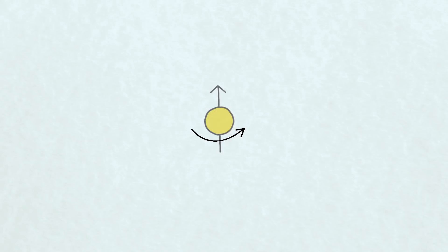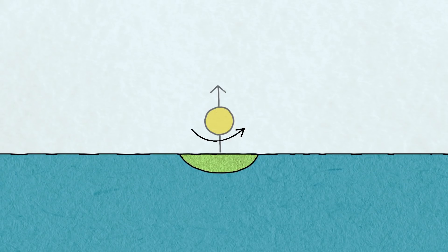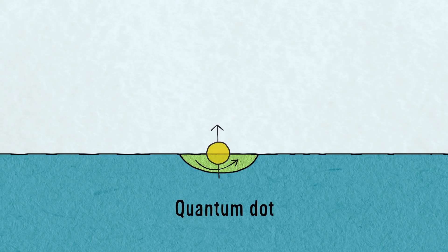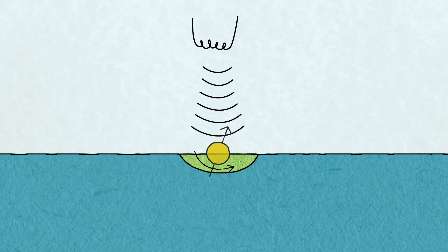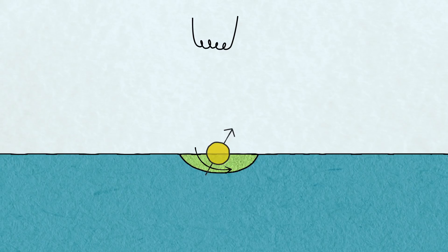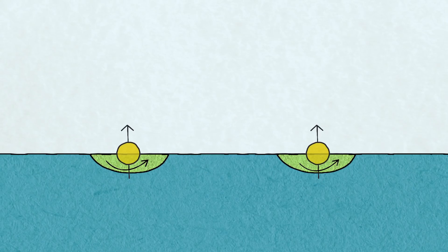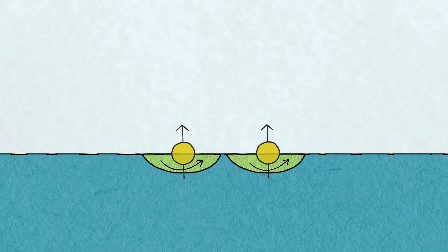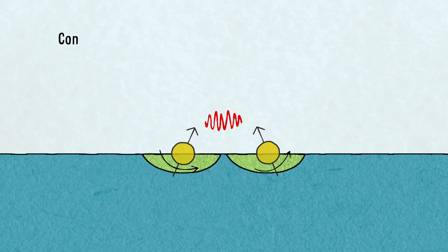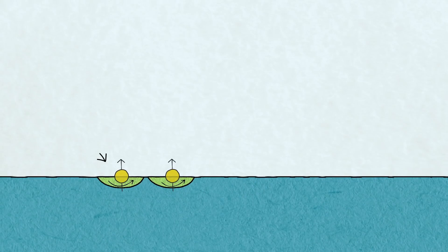On our quantum chip, we store the electrons in quantum dots, which act like tiny pools for the electrons. One way to control the qubits is to change the direction of spin with precise microwave pulses. The nice thing about our design is that we can move the electron pools. When the pools are close enough, the electrons will start to feel each other, so they can interact. For example, you could make them do a conditional rotation, which means that one rotates, but only if the other is up.